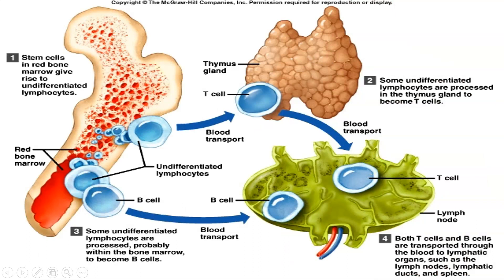This diagram shows the two routes that B and T cells take to get to the lymphoid tissue. Both start off in the bone marrow as undifferentiated lymphocytes. B cells remain in the bone marrow and mature, then migrate towards the lymph tissue and lymph nodes. T cells, on the other hand, are made in the bone marrow and migrate towards the thymus where they undergo their differentiation process, then migrate to the lymphatic system and circulate around the body looking for infection.